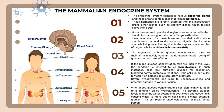Target cells which have receptors for a hormone on their cell surface membrane respond to the hormonal signal. For instance, the cells lining the ducts in the nephrons are an example of target cells for anti-diuretic hormone, ADH.